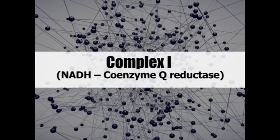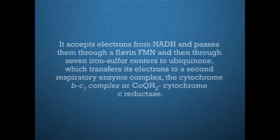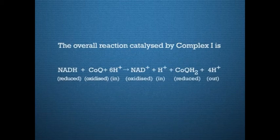Now let us study complex 1, also called NADH-ubiquinone oxidoreductase or NADH dehydrogenase. It is a large enzyme composed of 42 different polypeptide chains, including an FMN-containing flavoprotein and iron-sulphur centres. It accepts electrons from NADH, passes them through a flavin FMN and then through seven iron-sulphur centres to ubiquinone, which transfers its electrons to the cytochrome BC1 complex or dihydroubiquinone cytochrome C reductase. The overall reaction catalysed by complex 1 is: NADH + CoQ + 6H⁺ → NAD⁺ + H⁺ + CoQH2 + 4H⁺.